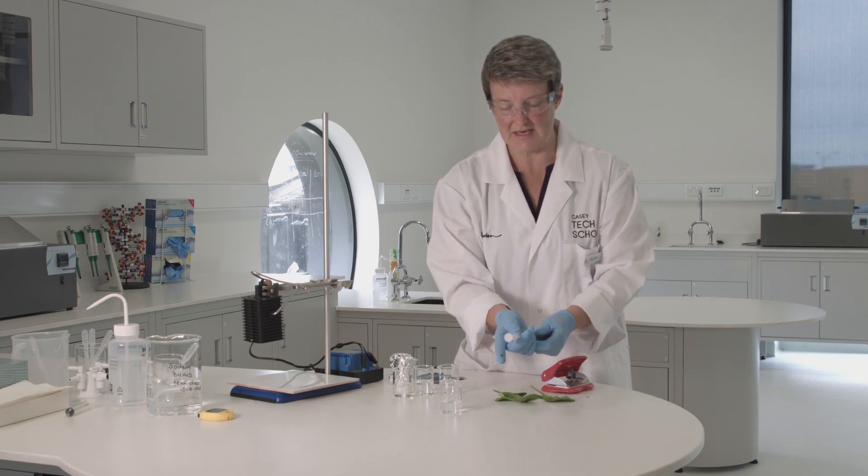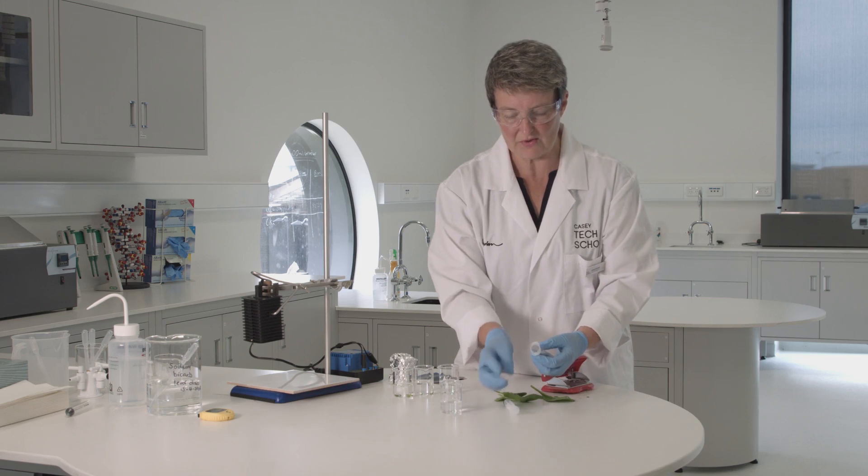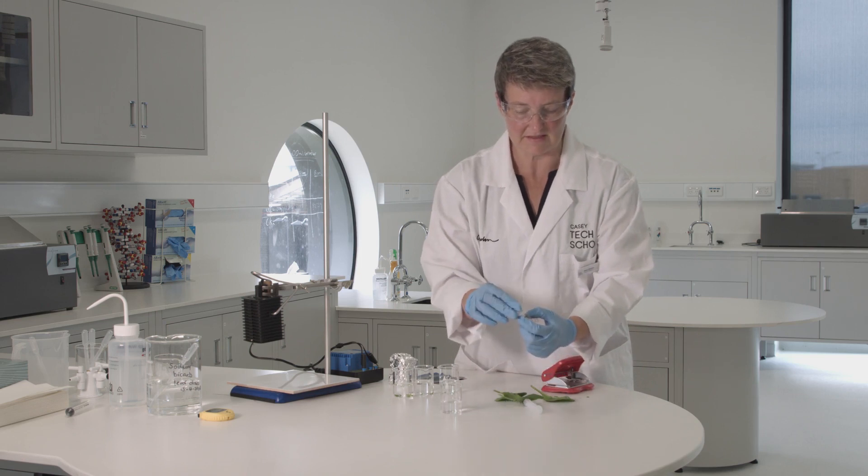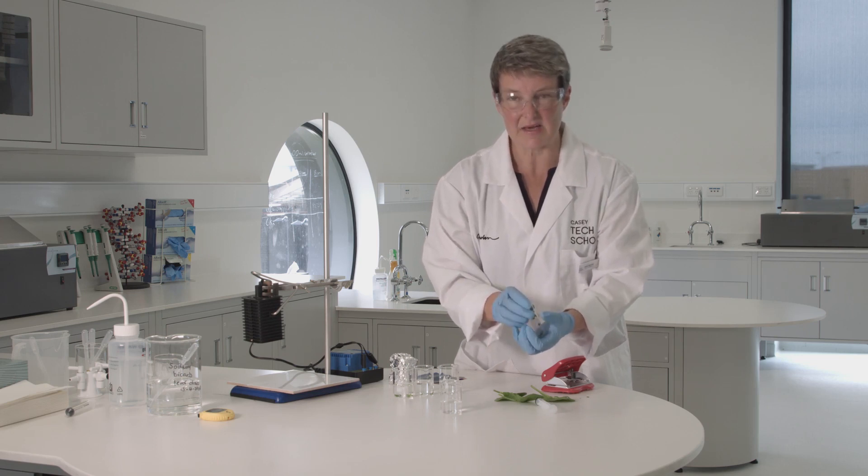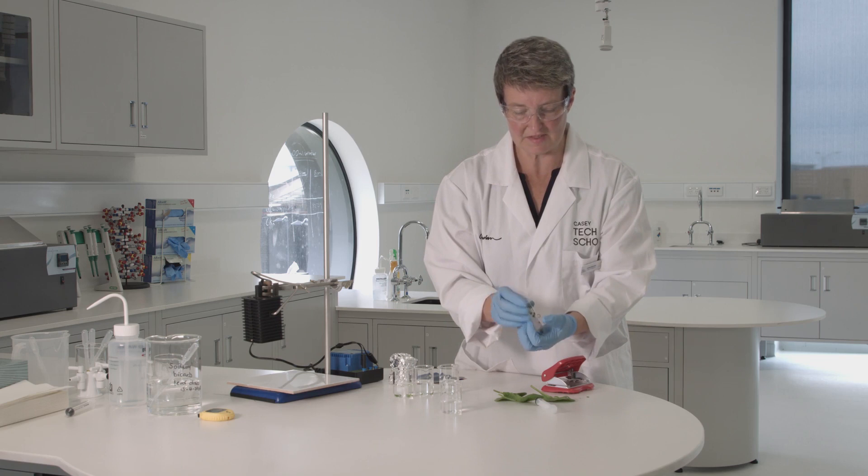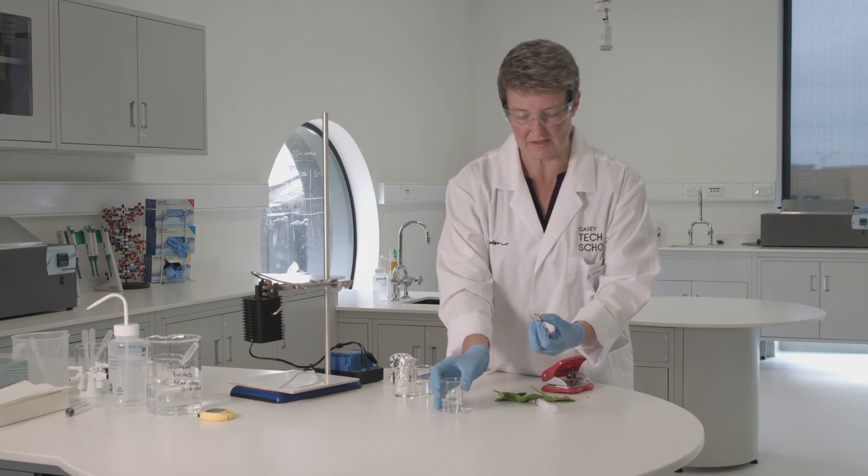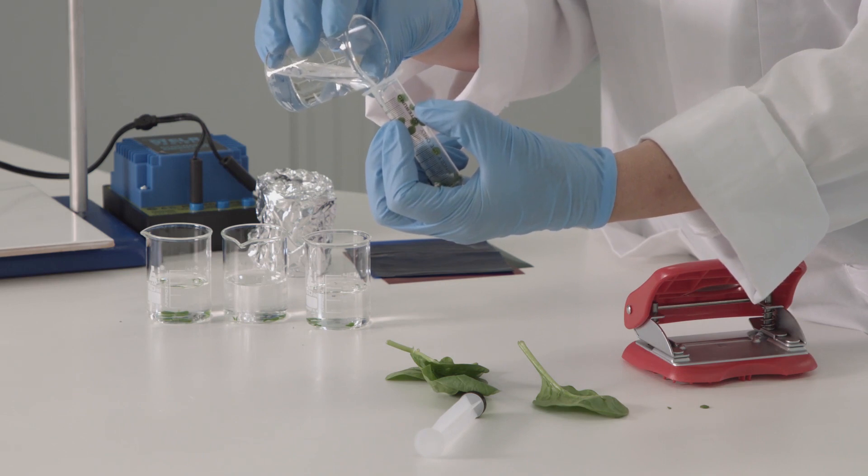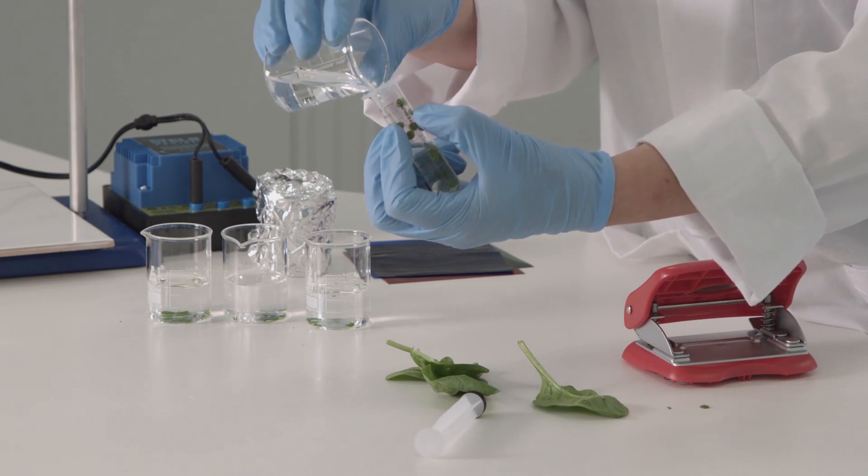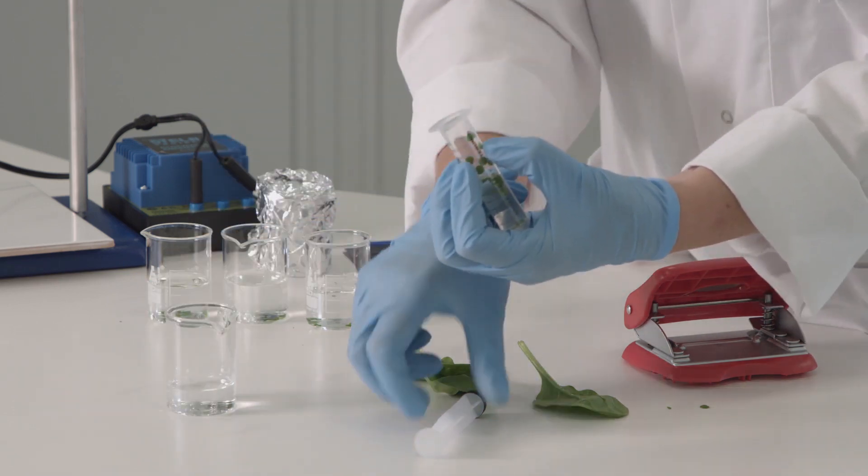So what I need to do is replace all the air pockets in the leaf with a carbon dioxide solution. It's a carbonate buffer, about 2%, with a bit of detergent in there as well. I'm going to pour some of that into a 10 ml syringe together with all my leaf disks.